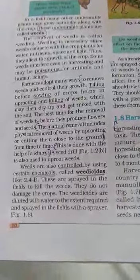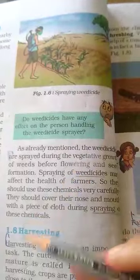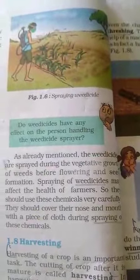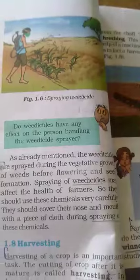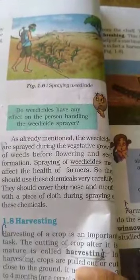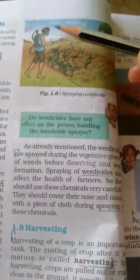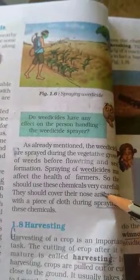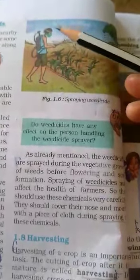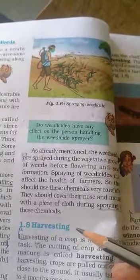Diluted weedicide is sprayed in the field with a sprayer. As already mentioned, the weedicide is spread during vegetative growth — weeds before flowering and seeding. These chemicals affect the health of farmers, so they should use chemicals very carefully. They should cover their nose and mouth with a piece of cloth during spraying.